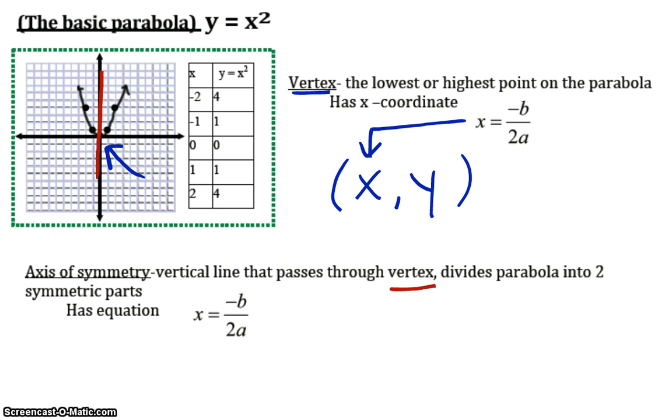And, it is the vertical line that passes through the vertex and divides the parabola into two symmetric parts. Now, because it passes through that vertex, I actually have the same formula for the axis of symmetry as I did my vertex. So, the vertex, also known as the apex, the x coordinate can be given by x equals negative b over 2a. And, the axis of symmetry, since it passes through the vertex, it has the same formula.